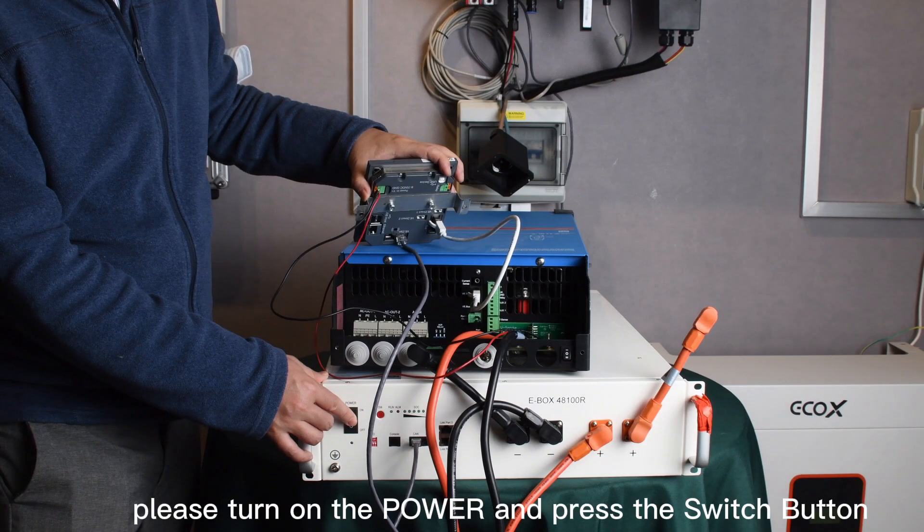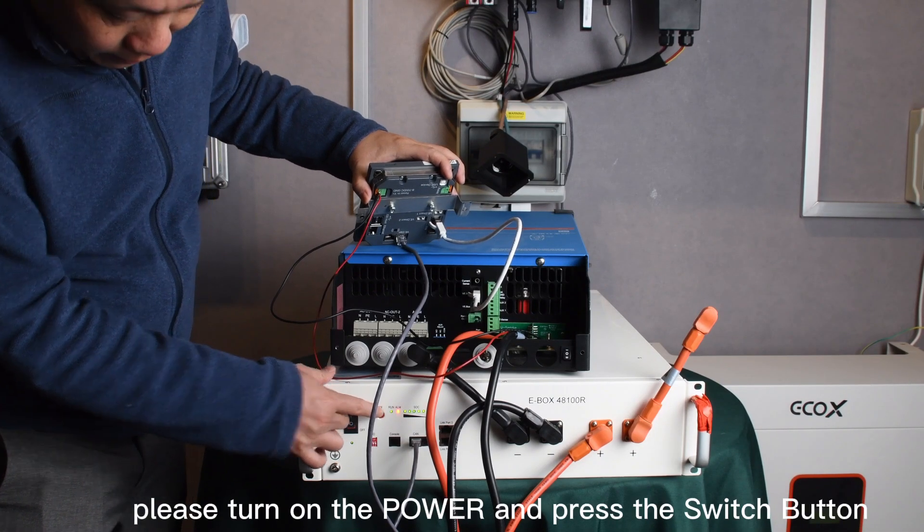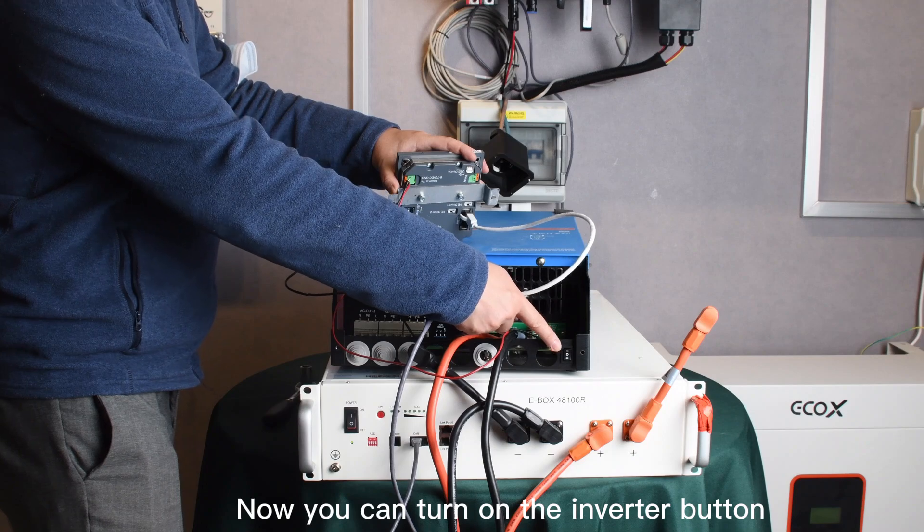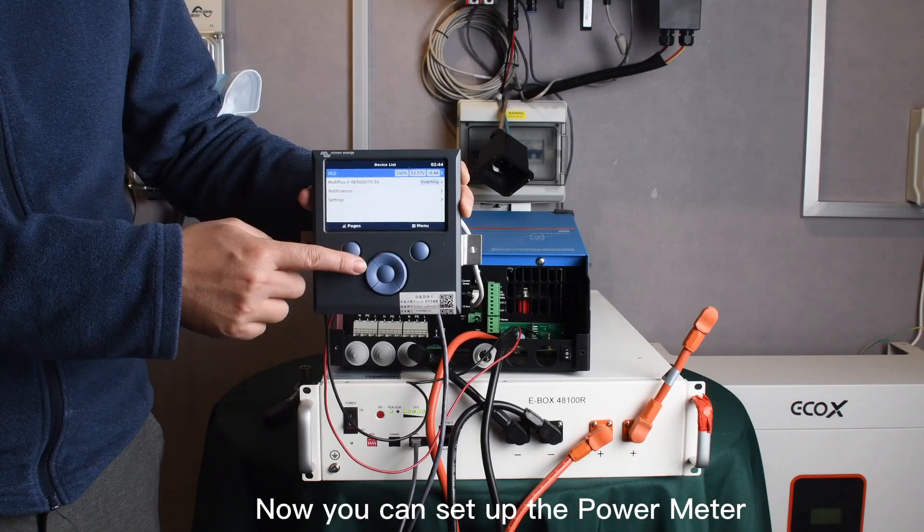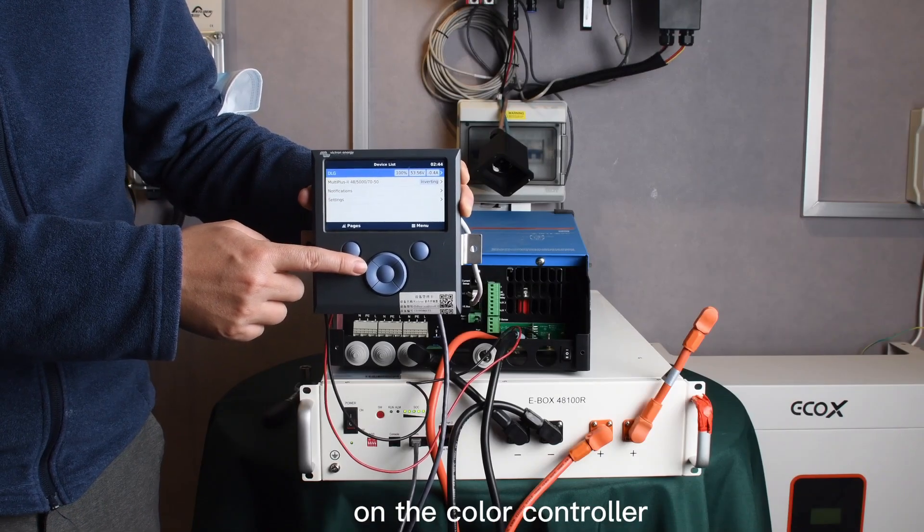Next, please turn on the power and press the switch button. Now you can turn on the inverter button. Now you can set up the parameters on the controller.